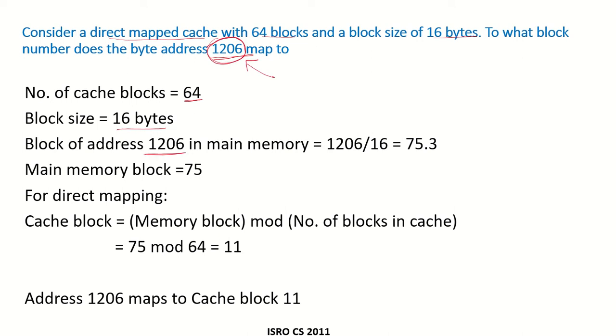The block of address 1206 in the main memory would be 1206 divided by the size of the block, because that is going to give us which block this address lies in. Remember that the block size in the cache and the block size in the main memory will be the same size. So 1206 divided by 16 would give you 75.3, which means address 1206 is in block 75.